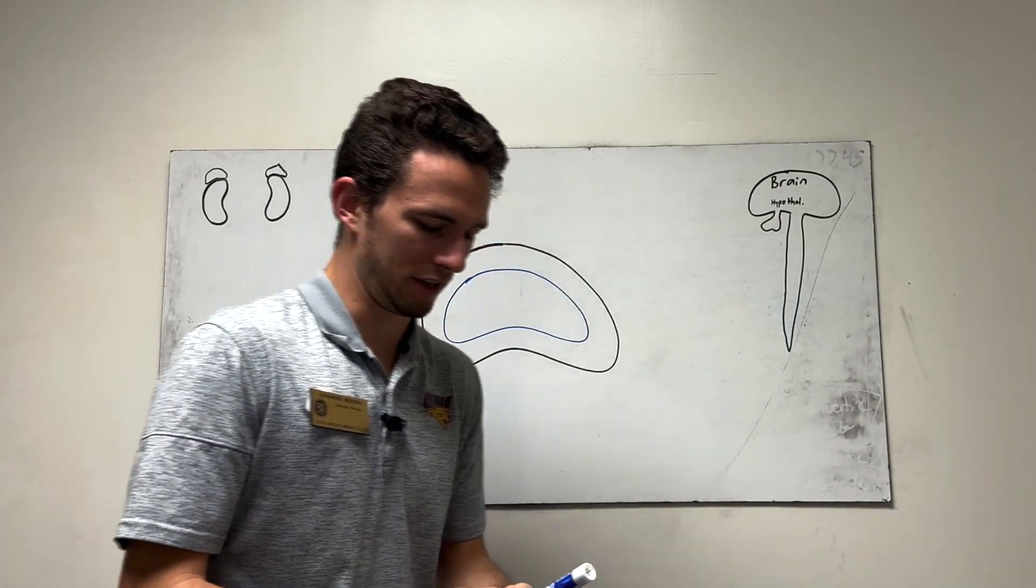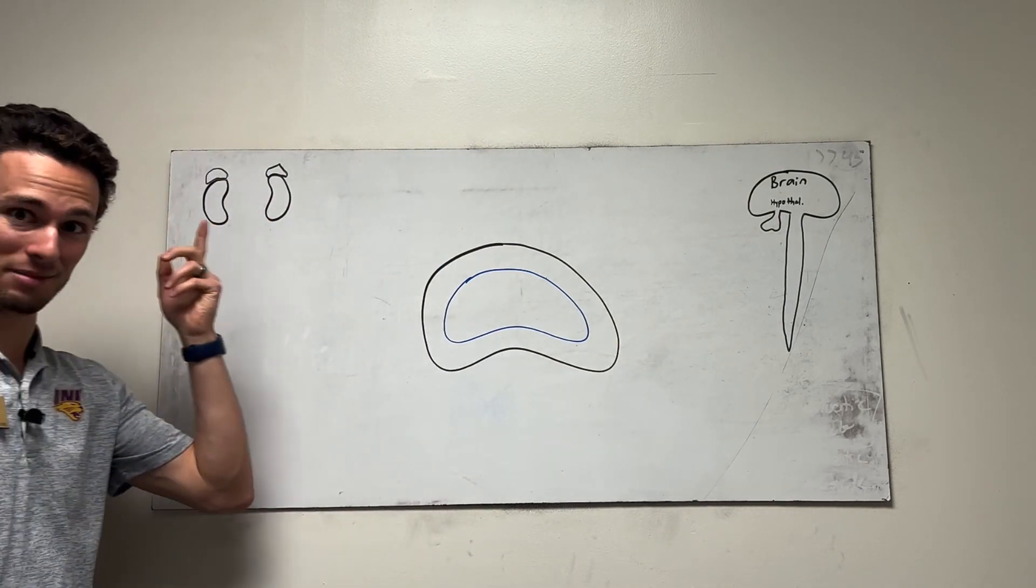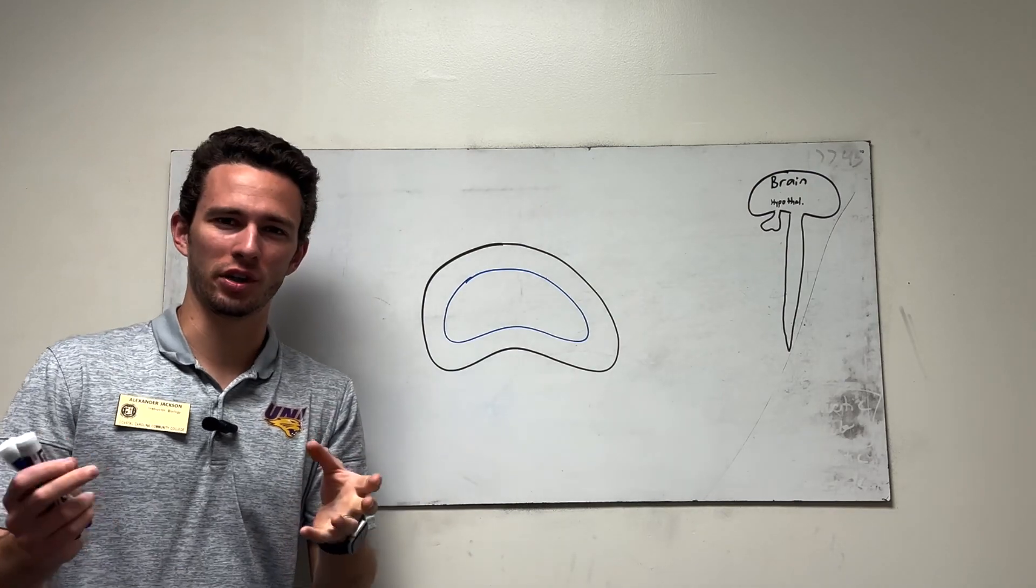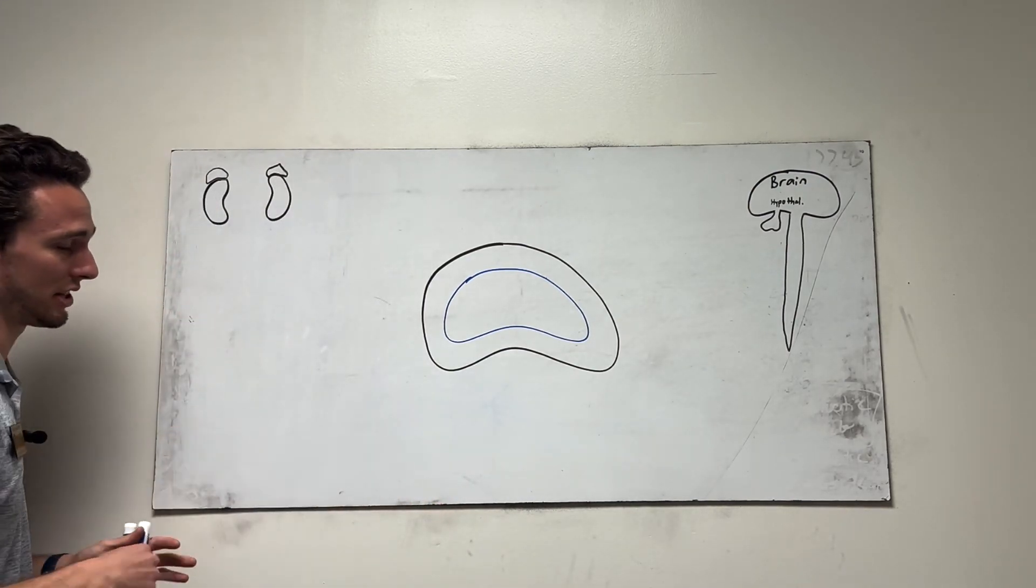All right, let's talk adrenal glands. So first thing, I always call the adrenal glands the hats of the kidneys because they sit on top of the kidneys. So you could guess that the kidneys are going to influence the adrenal glands function in some way or another. We're going to see that here in a little second.